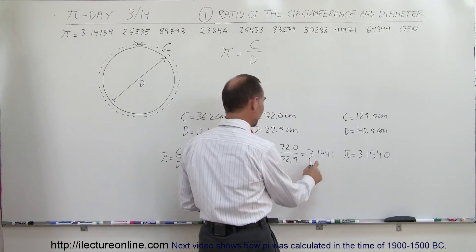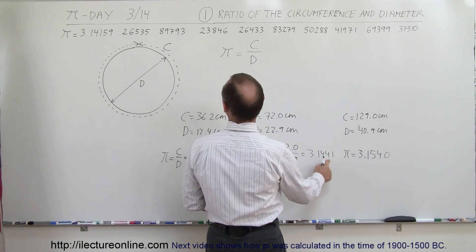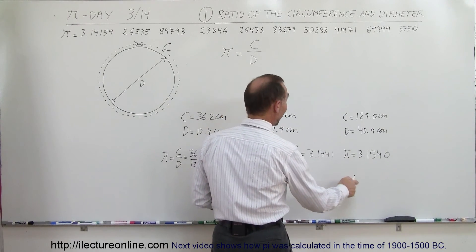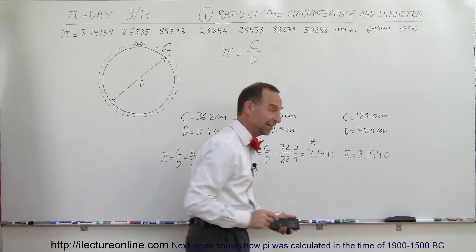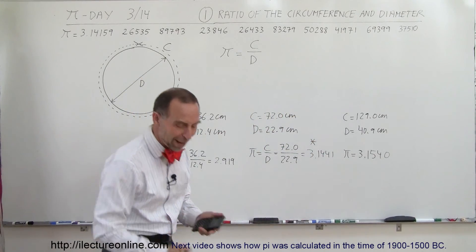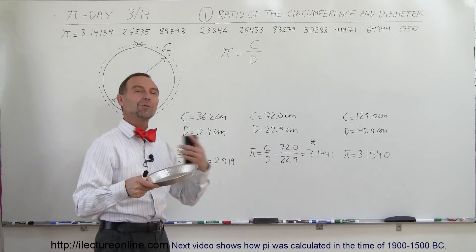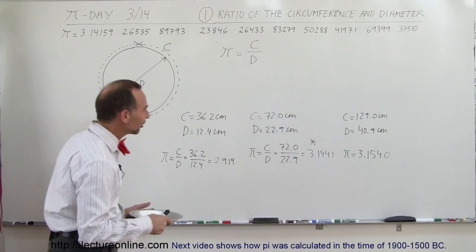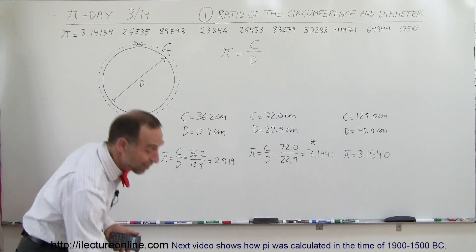Let's see here. 3.144, 3.15. Actually, this was our best measurement. Guess what? When we used the pie pan, we got the most accurate measurement for pi. Look how close we actually got. Pretty impressive.